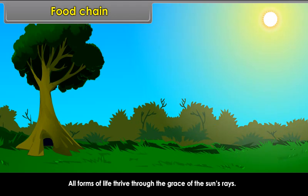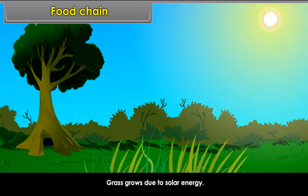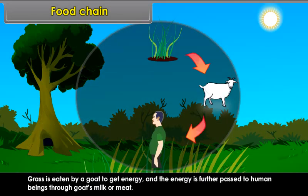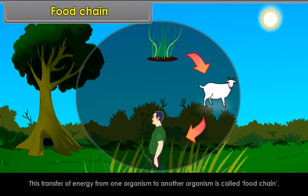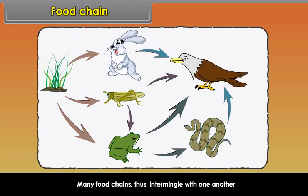Grass is eaten by a goat to get energy, and the energy is further passed to human beings through the goat's milk or meat. Thus, there is a transfer of energy from one organism to another in the form of food. This transfer of energy from one organism to another is called a food chain. Many food chains intermingle with one another, showing complex relationships of organisms at different levels, and form a food web.